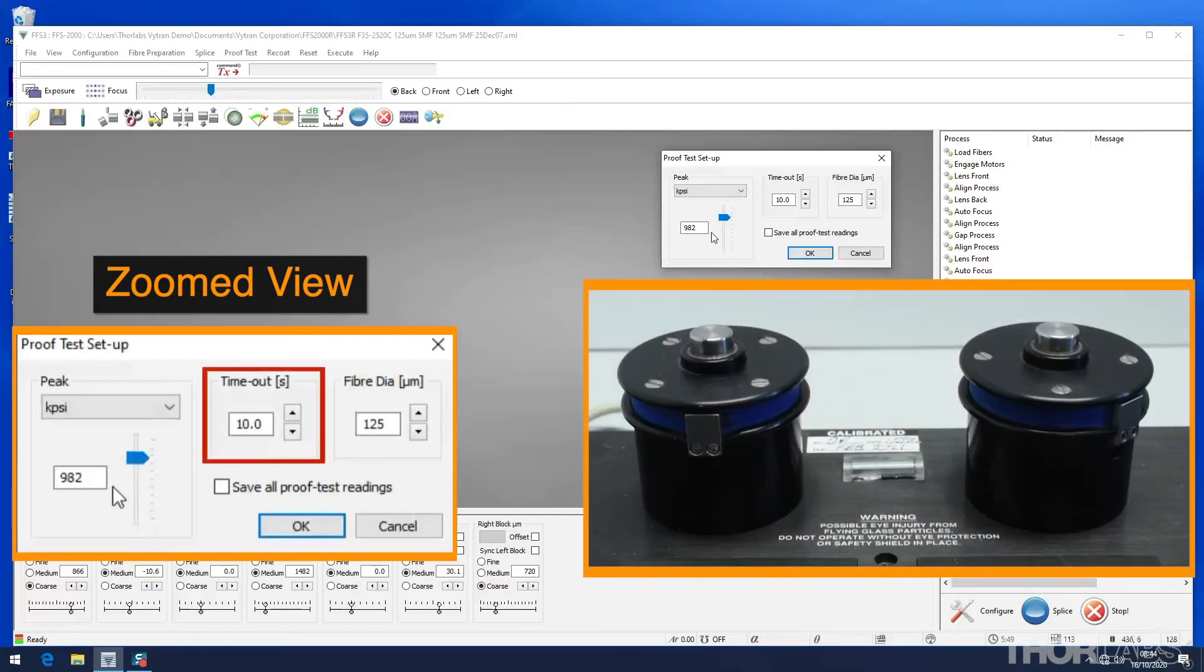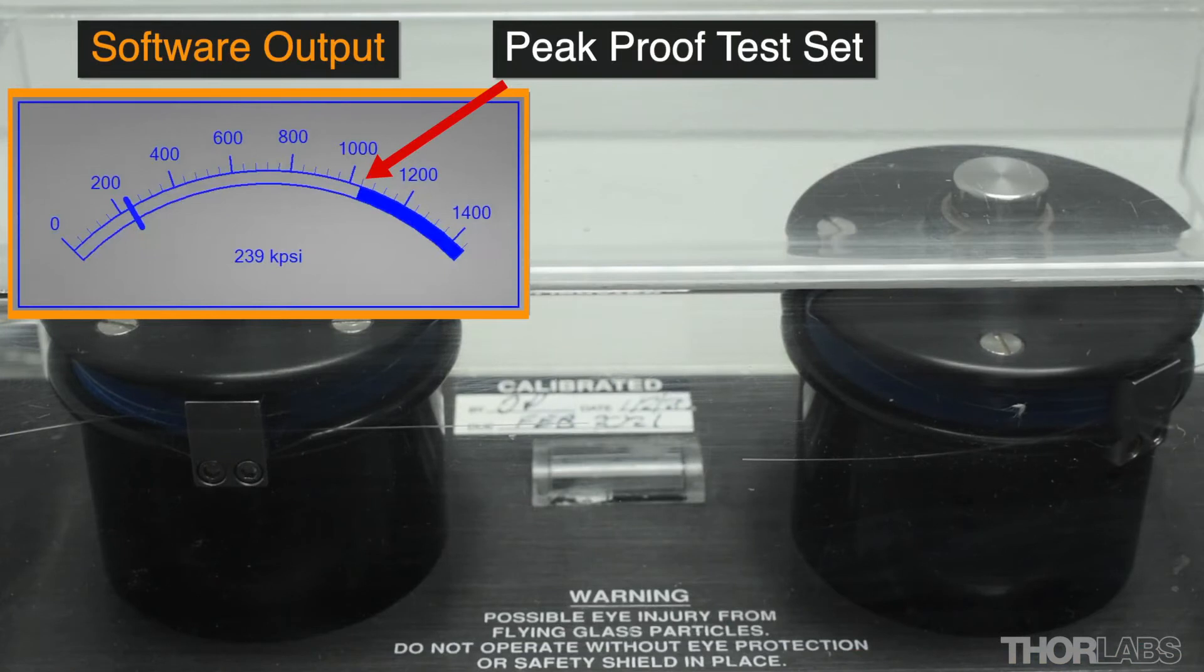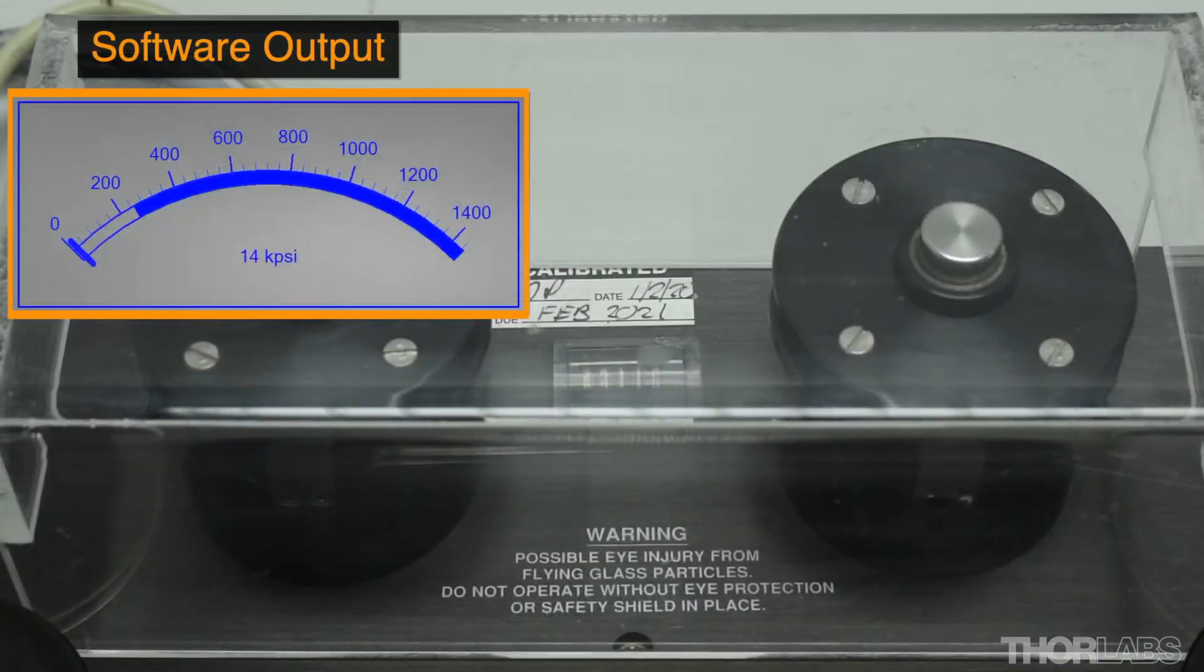The timeout period limits the time period over which the proof test process runs. At the end of the timeout period, the right hand mandrel returns to its starting position and the proof test mechanism resets. If a fibre breaks prematurely, this limits the amount of wait time before the proof tester can be used again. If however the fibre reaches the peak strength set without breaking, the proof test mechanism will automatically reset before the timeout period has elapsed.